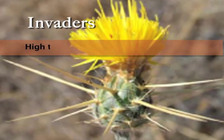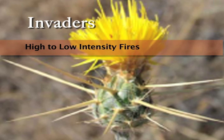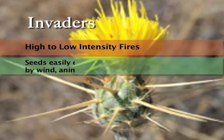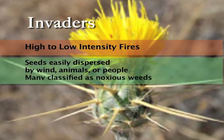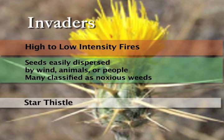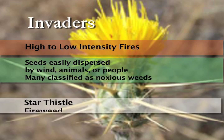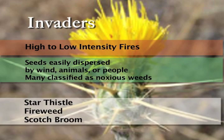Invaders take over recently burned areas, and their populations are either limited or unknown prior to fire. Invaders tend to have seeds that are highly dispersive by wind, animals, or people. Many invaders are noxious weeds that take over areas after disturbances such as fire, flood, or development. Some examples include star thistle, fireweed, and scotch broom.